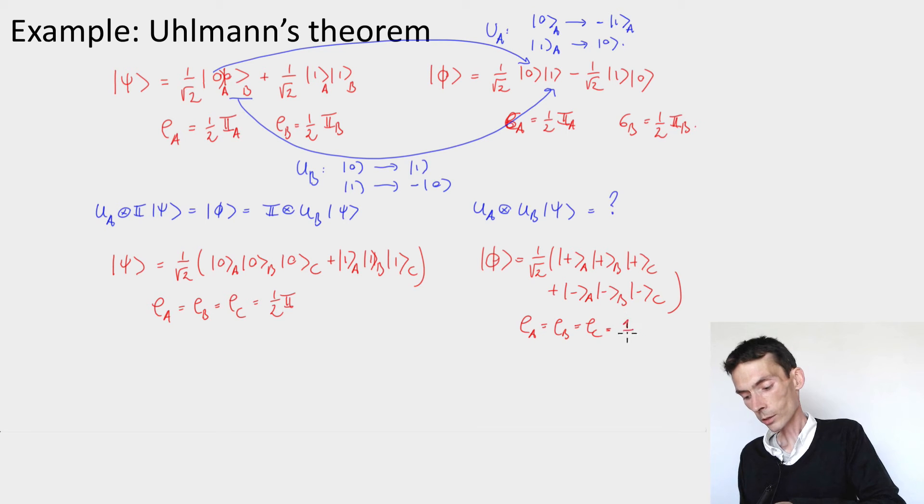So they have the same single qubit reduced density matrices. Does it mean that I can map the one to the other by acting only on one of the systems? Is there a unitary UC that can map psi to phi?